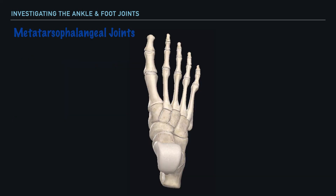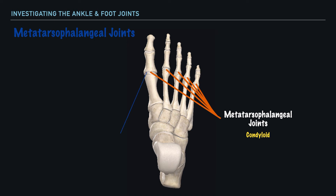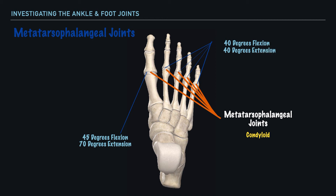Next, we have the metatarsophalangeal joints, which represent the articulation between the phalanges and the metatarsals, and they are classified as condyloid joints. Specifically at the great toe, we'll find the widest variability in motion. It's common to see flexion at 45 degrees and extension at 70 degrees. At the metatarsophalangeal joints of the lesser toes, it's typical to see 40 degrees of flexion and 40 degrees of extension, and we do have minimal abduction and adduction that occur as well.